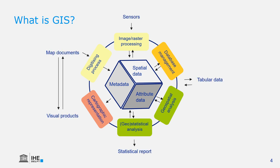We can have data from sensors that provide raster images for use in GIS. We can have data from tables, spreadsheets, or comma-separated files that we can use or convert to spatial data. We can do statistics or derive statistical reports, digitize maps to get data into GIS, or get data out of GIS and print it on a map or use it in interactive websites.